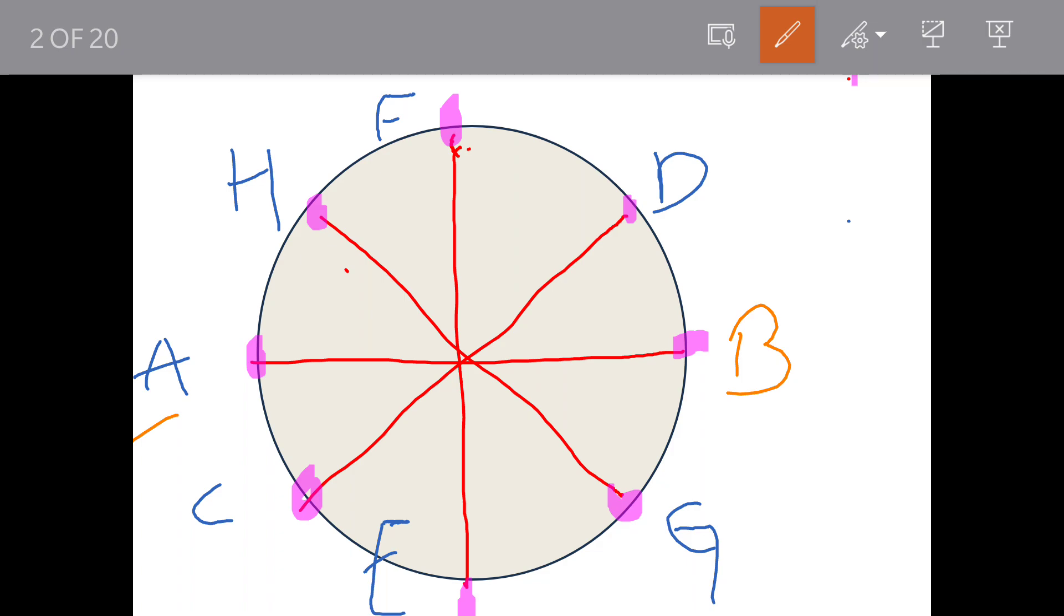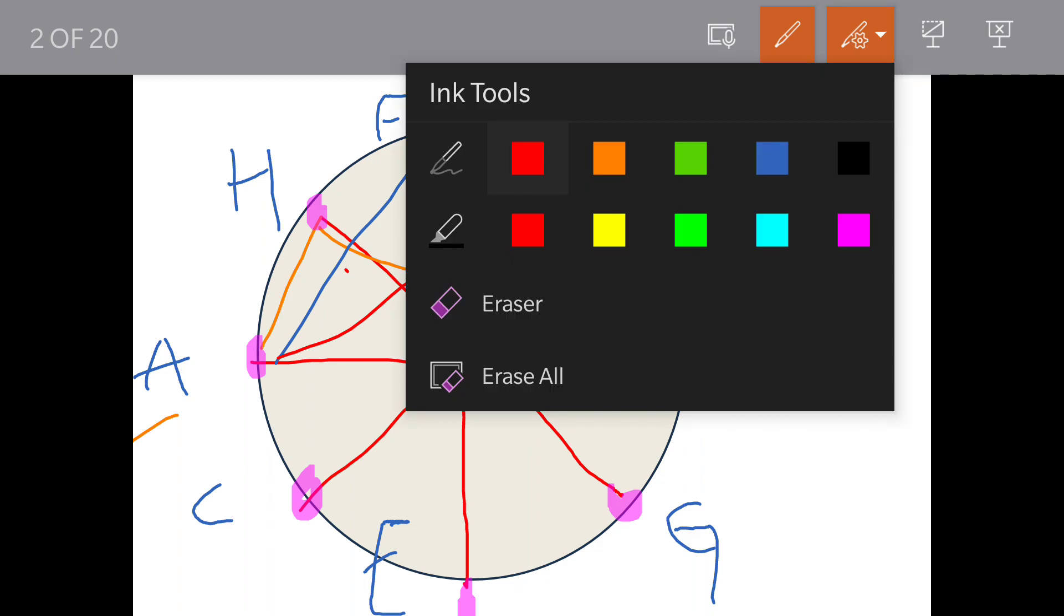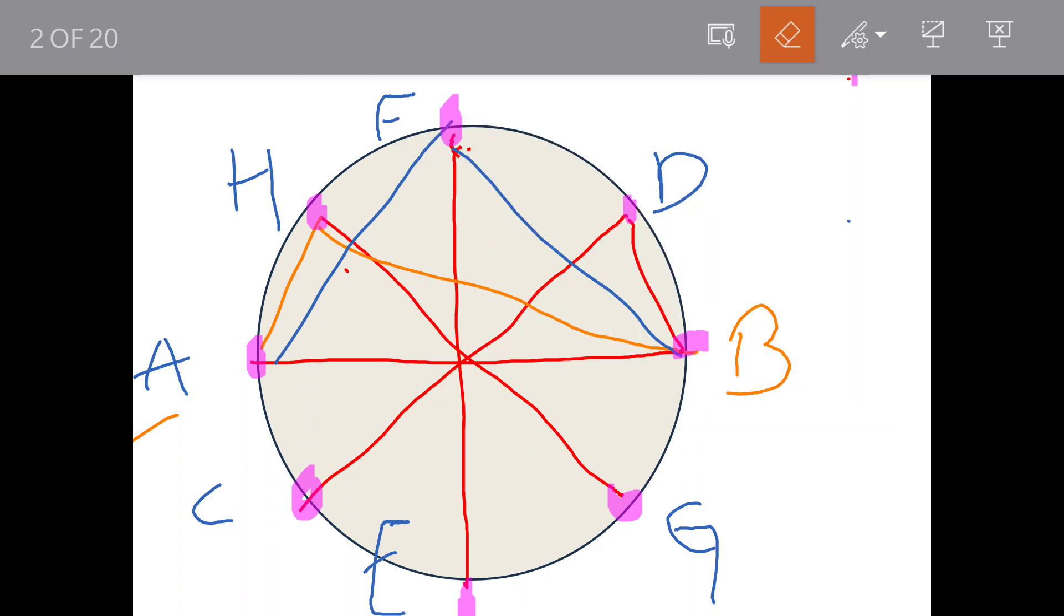Let's take AB as the diameter and draw the triangles: first triangle, second triangle, third triangle. So on one side we have drawn three triangles.